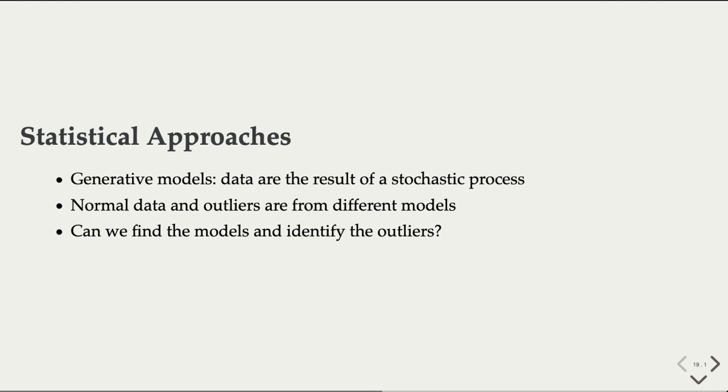As we discussed, outliers come from a different process or model that generates normal data. These are generative models or stochastic random processes hidden behind the data. The idea here is that if we can find out the model that produces normal data, we will then be able to estimate the likelihood or probability of a potential outlier. Now, how can we learn from data about the models?